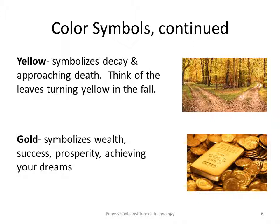Additional color symbols include yellow, which symbolizes decay and approaching death. Think of the leaves turning yellow in the fall, and how that is a foreshadowing of the coming winter, when everything dies and goes underground. Then we have gold, which symbolizes wealth, success, prosperity, and achieving one's dreams. Gold can oftentimes be used ironically — somebody who has a golden dream, and at the end of the story, like in Gatsby, it falls apart. Gatsby's gold car runs over Myrtle. Of course, Gatsby's not driving, but I don't want to drop any spoilers if you haven't read the book.